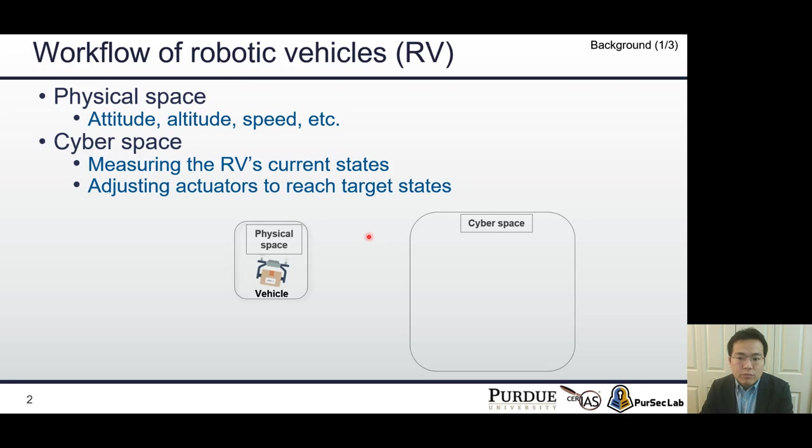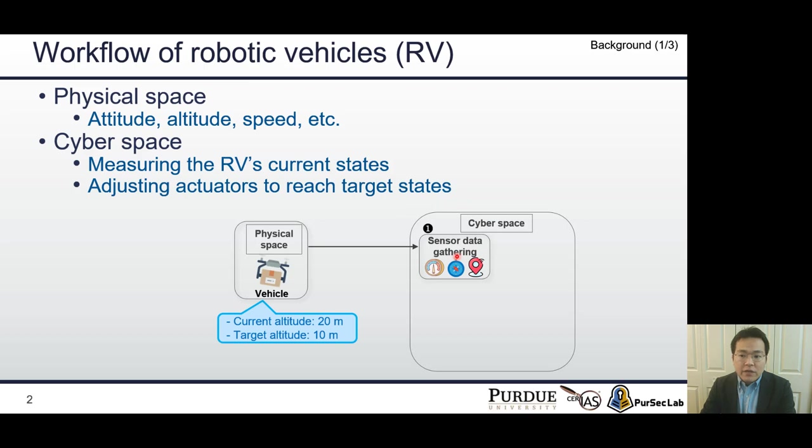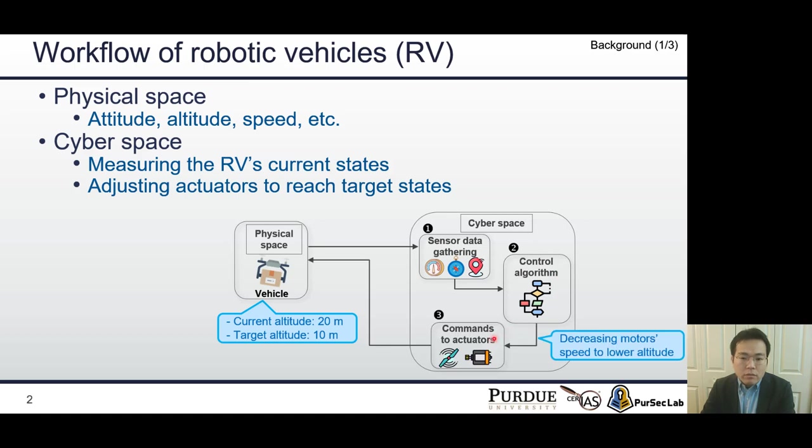For example, let's assume that the RV's current altitude is 20 meters, but the user wanted to decrease the altitude by 10 meters. First, the RV control program measured the physical state by measuring sensor data. Second, the control algorithm decided command to actuator, such as decreasing motor speed to lower altitude. Third, the decreased motor speed is actually lowering the vehicle's current altitude. These three steps show how robotic vehicles operate.